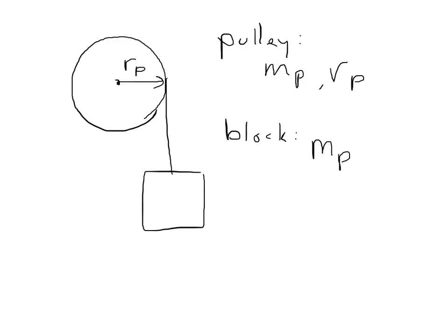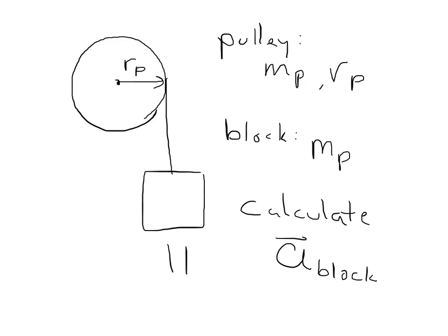What we want to do is calculate the acceleration of the block. We know it's going to be accelerating downwards because gravity is pulling it down. When the pulley has mass, it's going to overall slow down the acceleration of the block. The more massive the pulley is compared to the block, the slower the acceleration. We can work this out, but first we need to draw some free body diagrams, because that's the first thing we do for everything.